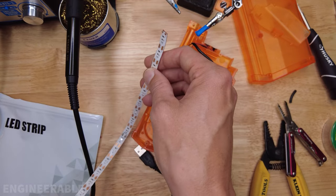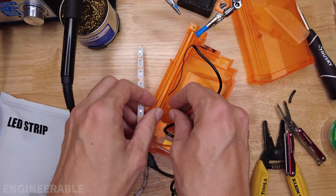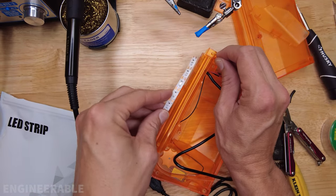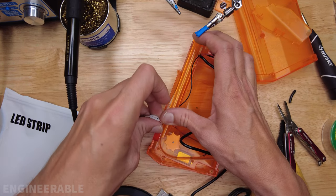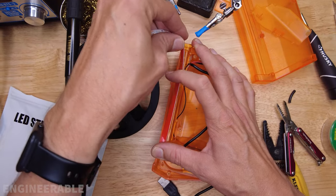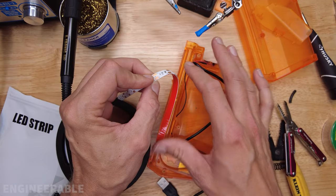Now I got to figure out what length of LED we need here. So I'm going to run the LED from underneath like this and then wrap it around and come back up with it. So we're going to cut it right there.